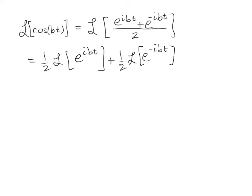Now from our previous example, we saw that these were just going to be 1 over S minus whatever coefficients here. So that's S minus IB. And then the other one is going to be 1 over S minus negative IB. So that's going to be plus IB.